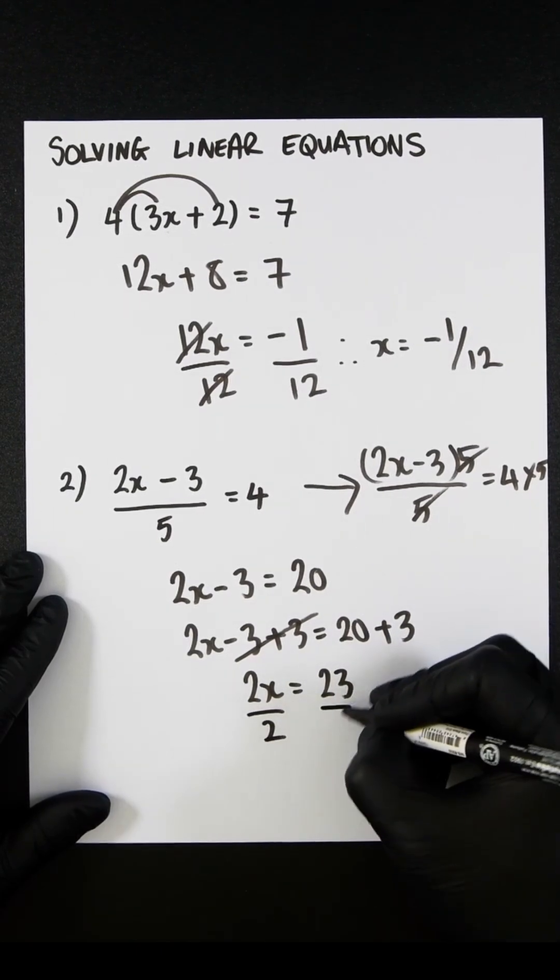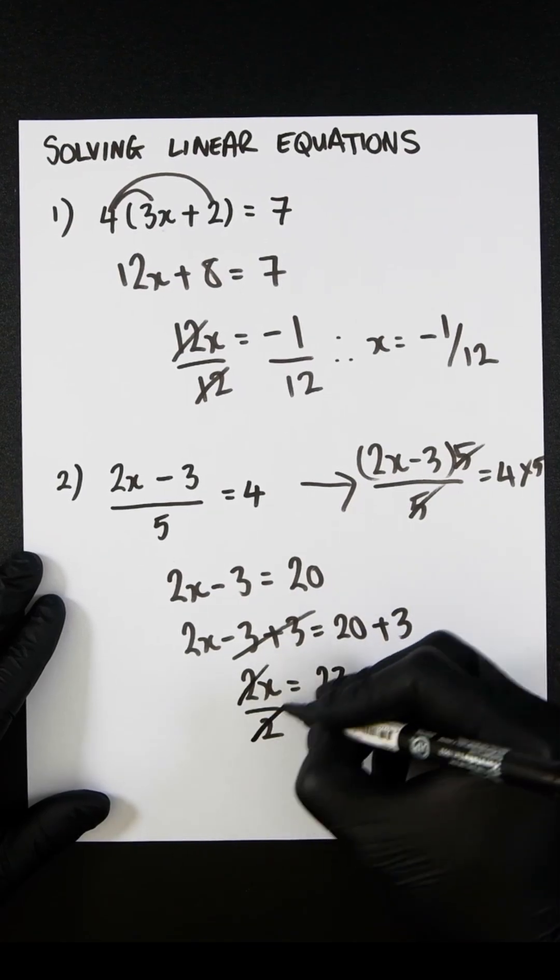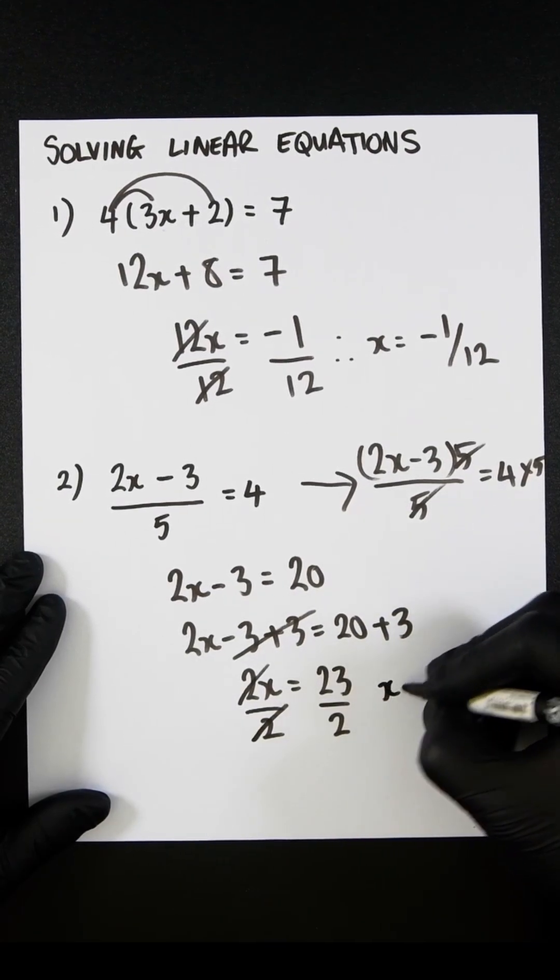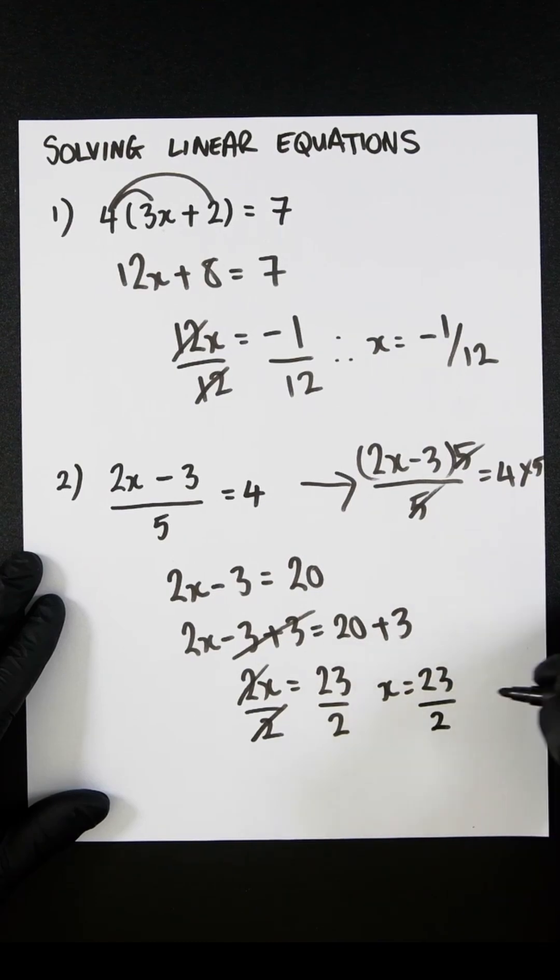And then we'll divide both sides by 2. So these will cancel out, and you will get x equals 23 divided by 2. Thank you.